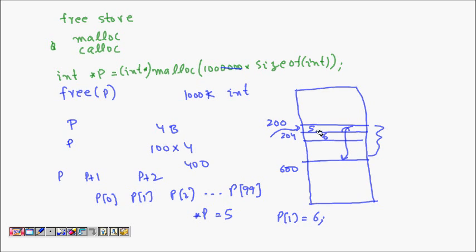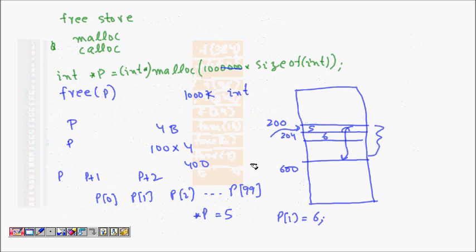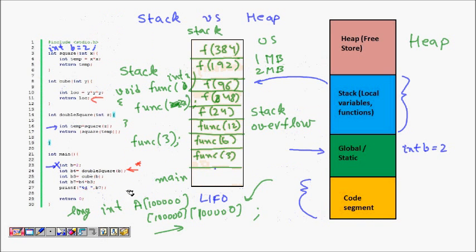So when you need a large amount of memory, or something that does not go out of scope when a function returns, you use the heap. Note that this heap does not resemble the heap data structure — it's just a large pool of memory. I hope you understand what stack and heap memory are. If you like this video, please subscribe to my channel and share it with your friends. Thank you.